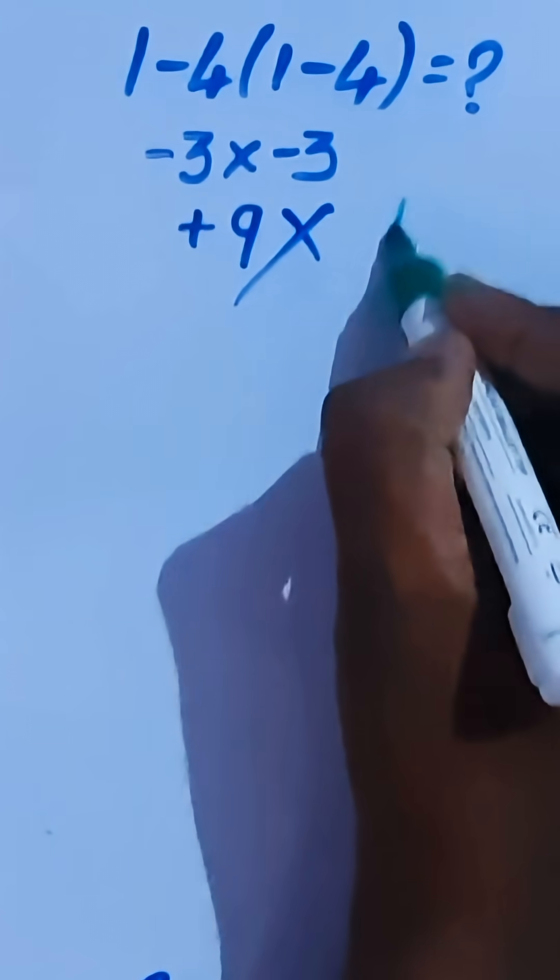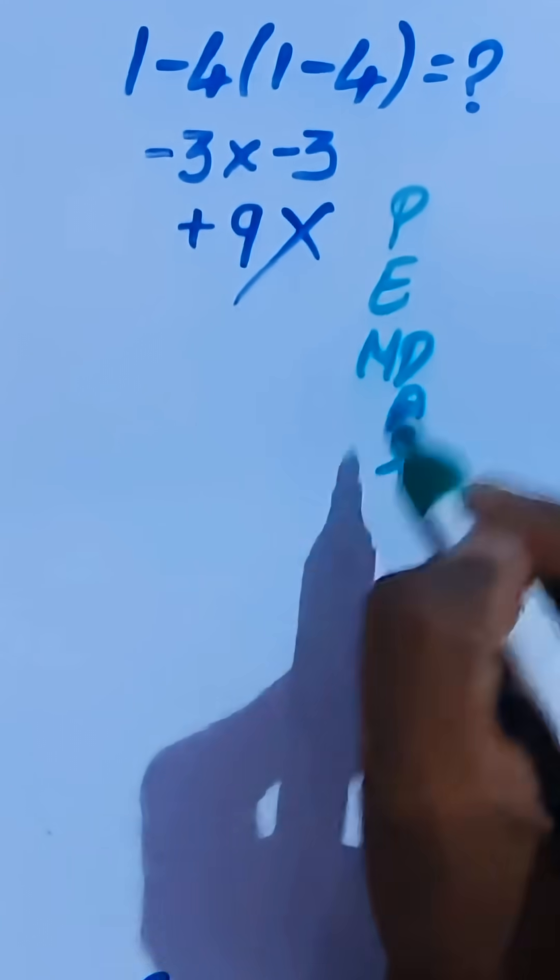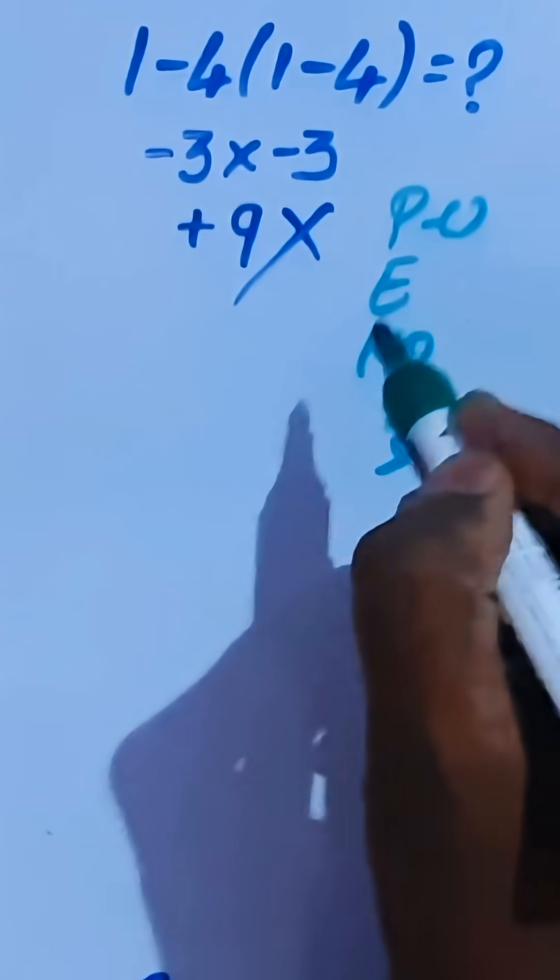Now here we are going to introduce the PEMDAS rule from order of operations. Here this is a bracket, higher priority.